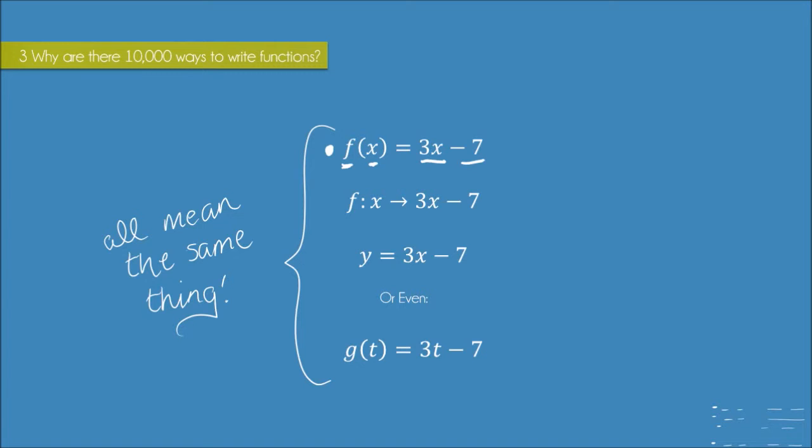We could instead use this mapping notation, which means the very same thing. Our input is x, and our function f maps x to 3x minus 7, because a function just maps an input to an output. So if our input is x, our output is 3x minus 7. And again, f here is just the name of our function, and we read that notation as f maps x to.